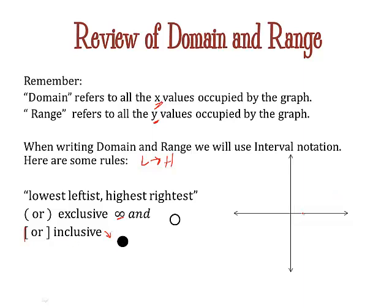Domain is all the x's. This arrow means it goes on forever, so that's negative infinity. This arrow is going in the positive direction to positive infinity. The x's can go from negative infinity to positive infinity.